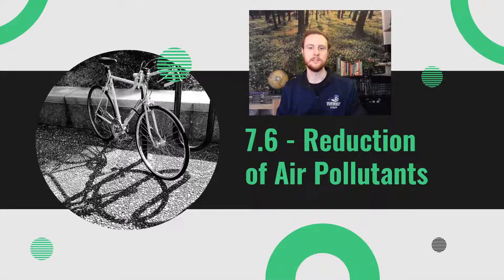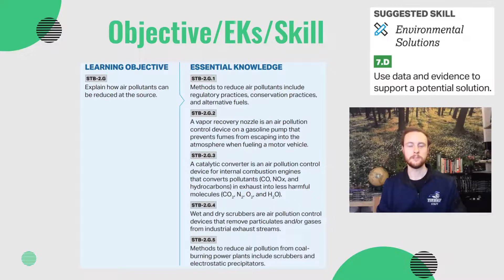Hey everybody, it's Mr. Smedes, and welcome to APE's video notes for topic 7.6, which is the reduction of air pollutants. Our objective for today is to be able to explain how air pollutants can be reduced at the source, and the skill we'll practice at the end of today's video will involve using data to justify a solution to an environmental problem.